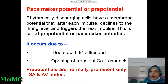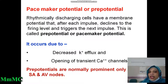What is pacemaker potential or pre-potential? In case of SA nodal action potential, rhythmically discharging cells — that is, SA node or AV node — have a membrane potential that, after each impulse, declines to the firing level and triggers the next impulse. This is called pre-potential.